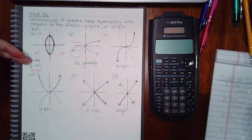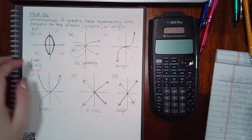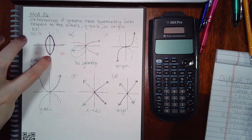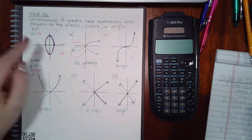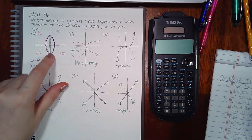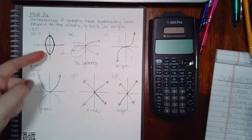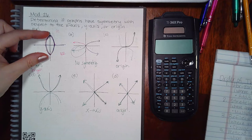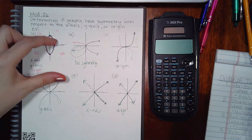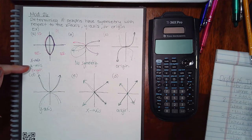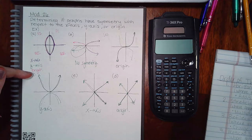For y-axis symmetry, if I take the graph and reflect it over the y-axis, does it land on itself? If I take what's on the right-hand side of the y-axis and reflect it, it actually lands on the left-hand side, and vice versa. So it does have symmetry with respect to the y-axis. For the origin, you have to do both flips at the same time.